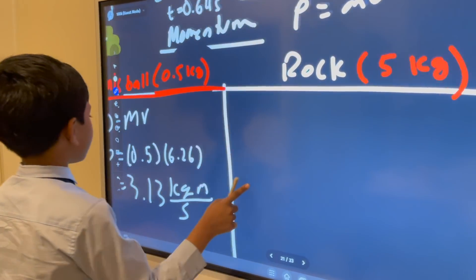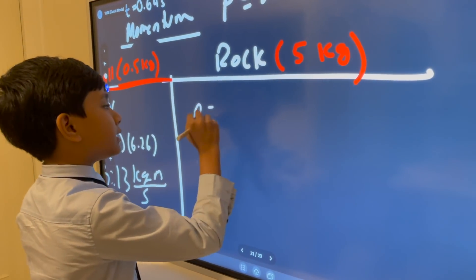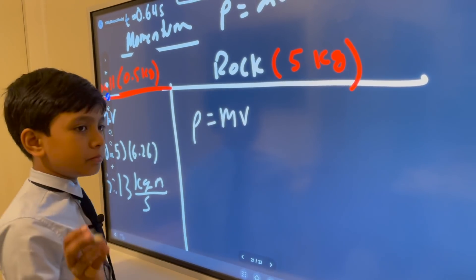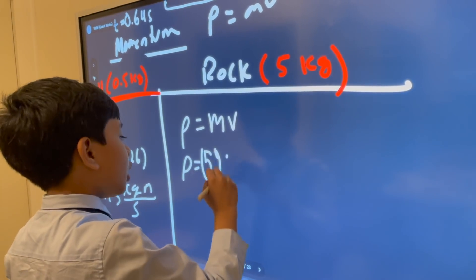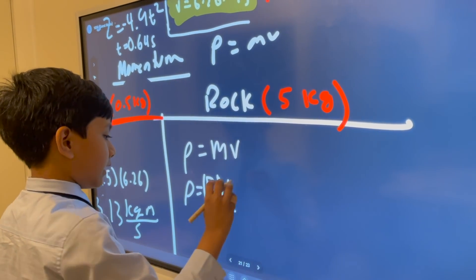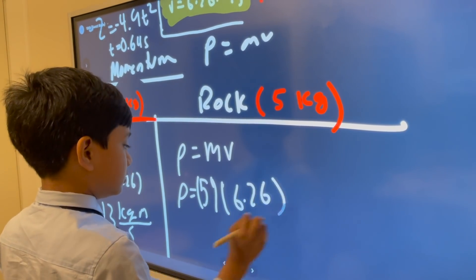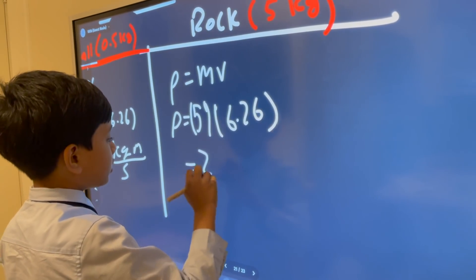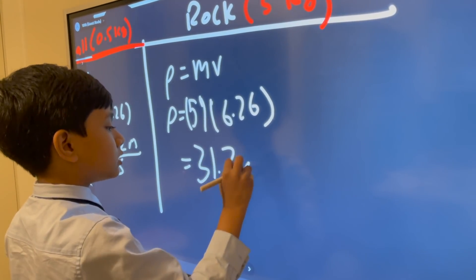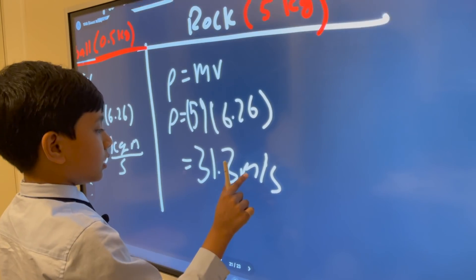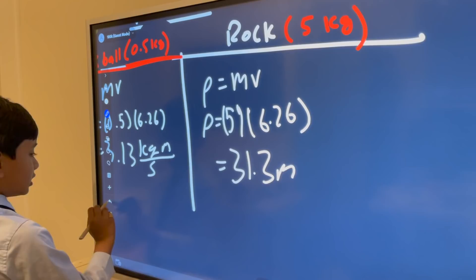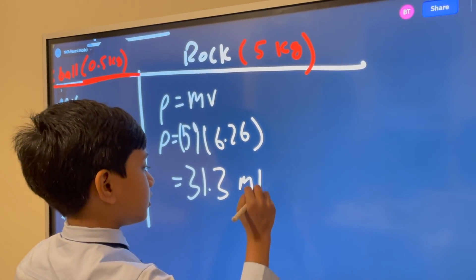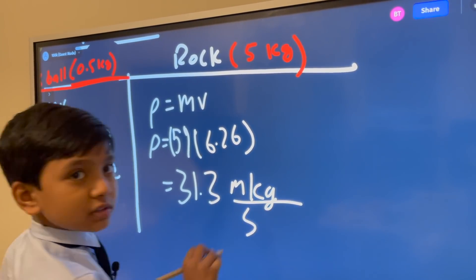And for the rock, it's really the same thing, but with ten times more, because the mass of the rock is just ten times the thing. So it's five, six point two six, thirty-one point three meters per second. Oh actually, sorry, sorry. What I meant to say was kilogram over a second.